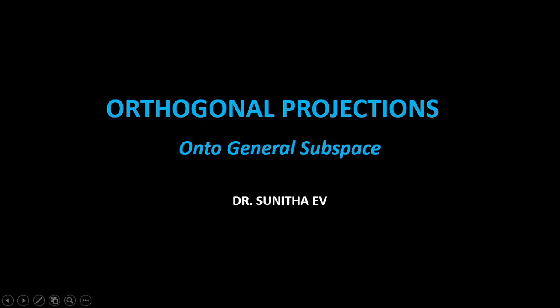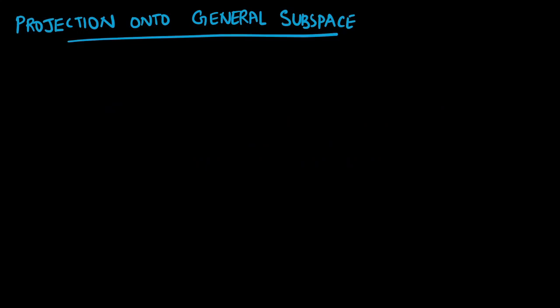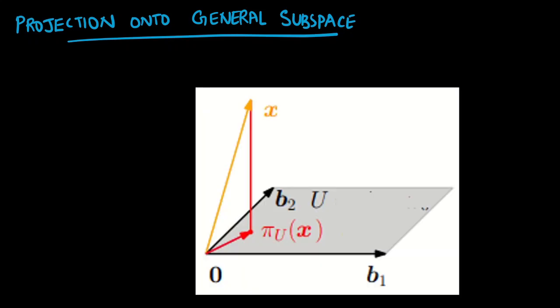Hi all, welcome to the session. Today we are going to see orthogonal projections onto the general subspace. The projection to the one-dimensional subspace, that is projection to a line, we have seen in the previous video. Here we are going to see the projection onto a general subspace. Consider a subspace U — here we have taken it as a two-dimensional subspace, and this yellow line is the vector x. We are going to find out the projection of x onto the plane U, or the subspace U.